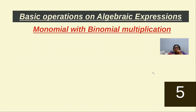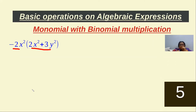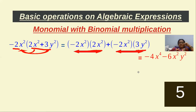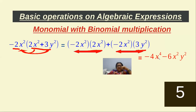Now the algebraic method for multiplication of a monomial with a binomial. We multiply the monomial term with the first term of the binomial: minus 2 × 2 gives minus 4, and x² × x² gives x⁴. Then we multiply with the second term: minus 2x² × 3y gives minus 6x²y. So the answer is minus 4x⁴ minus 6x²y.